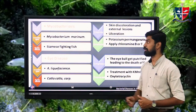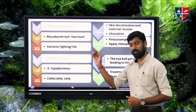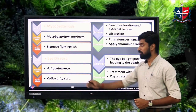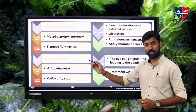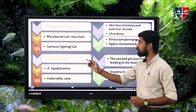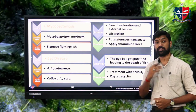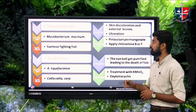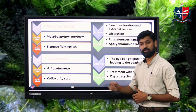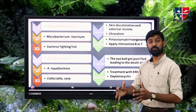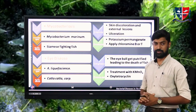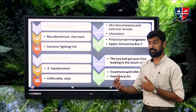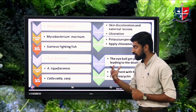Mycobacteriosis is caused by Mycobacterium marinum, mainly affecting the Siamese fighting fish, an ornamental fish. Major symptoms include skin discoloration and external lesions on the fins and body. Treatment involves bath treatment with potassium permanganate and application of chloramine B or T as antiseptic agents.